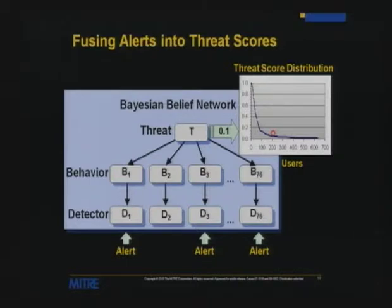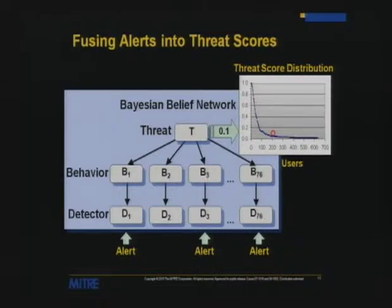You introduce evidence in the form of binary alerts for each detector. What you get out is a threat score between zero and one, following a highly skewed folded normal distribution. The graph shows threat scores sorted from high to low for about 1,500 active users in a day. As an analyst, you're happy to see few people with high threat scores and most people with little to none — you now have a sense of triage. Of course this is only valid if bad people actually show up near the top.